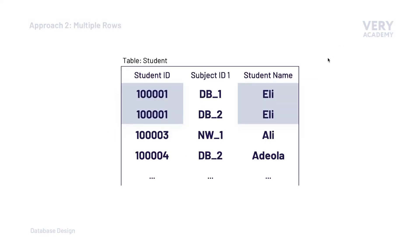The second approach is to utilize multiple rows. So you can see here that this student now has multiple rows. And in each row, we specify the different subject. Now you might already notice and spot the issue here. We now have redundant data. We're now recording the student ID and the name twice.